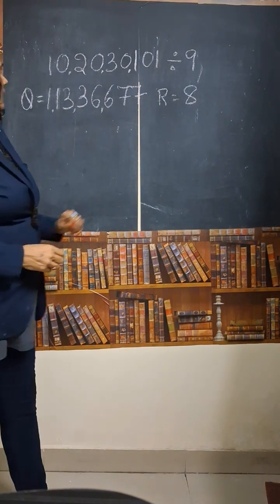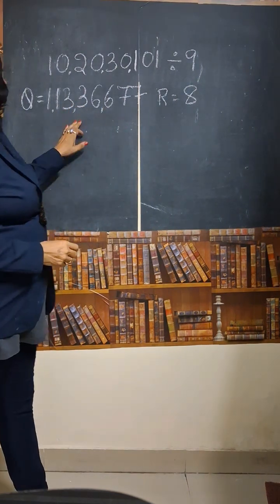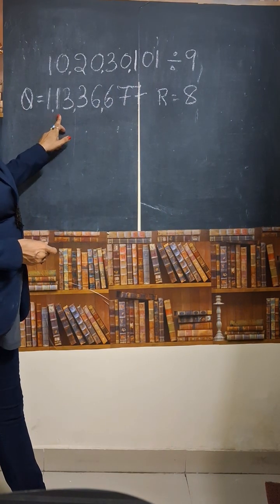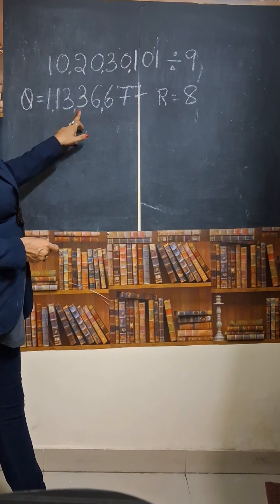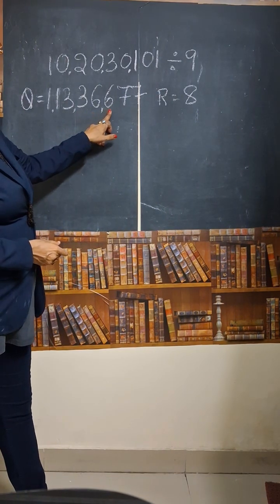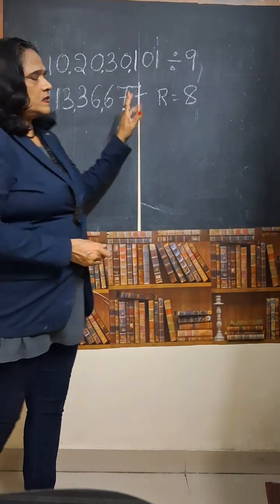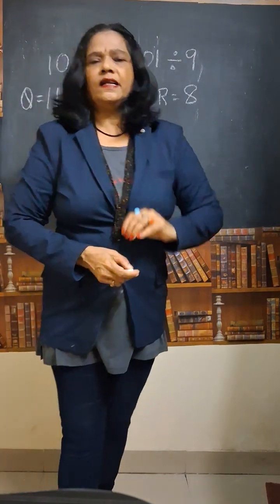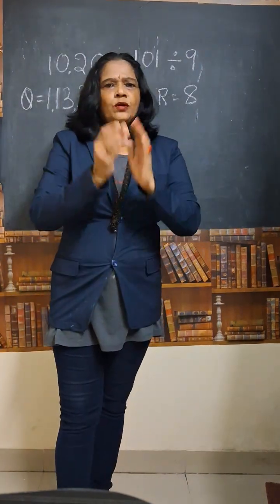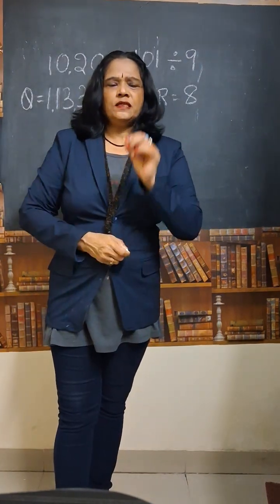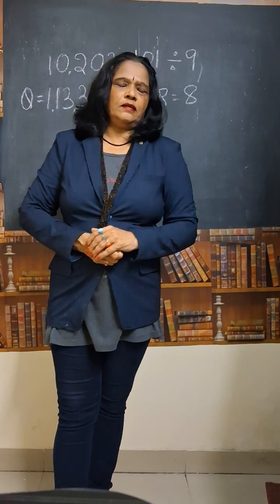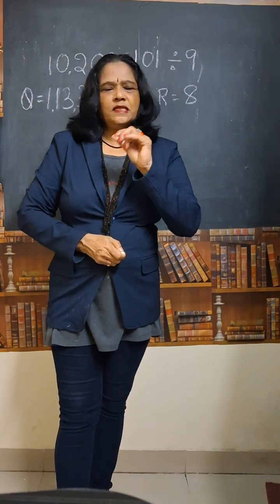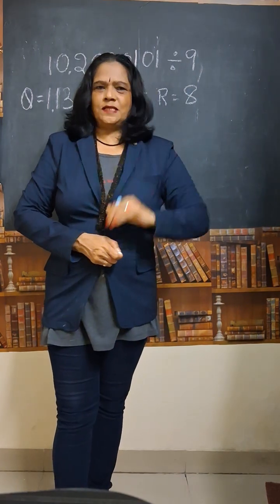So, easily we can do it. The answer is 1 crore 13,000,000, 36,677, and 8 is the remainder. By using these small Vedic mathematics tricks, we can do the maths in seconds.